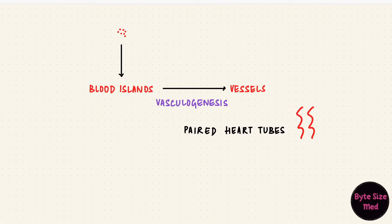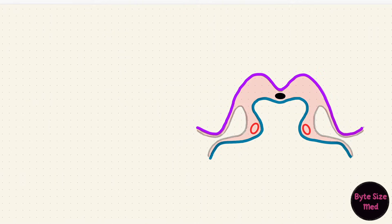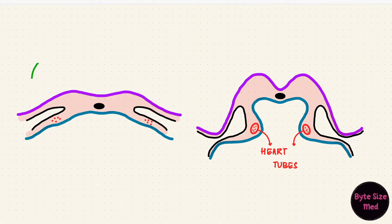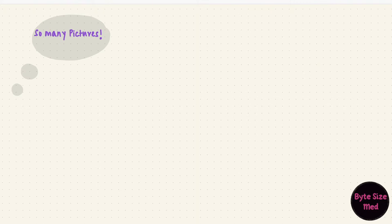Going back to those three germ layers, these are the two heart tubes, one on each side. The heart sits in the pericardial cavity, and that space forms from the intraembryonic cavity. The hard part about embryology is the fact that so many things happen at once and things keep changing, which is why there are so many sections at so many different angles.